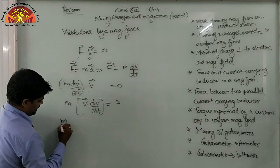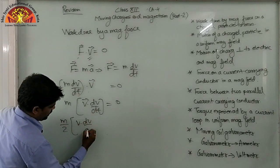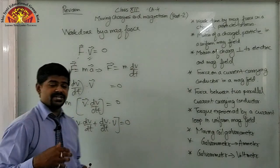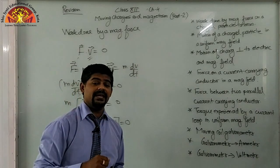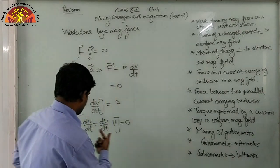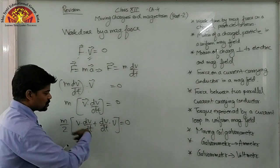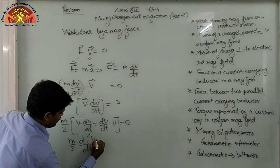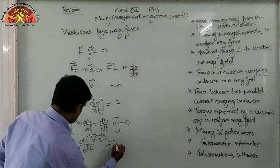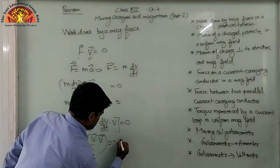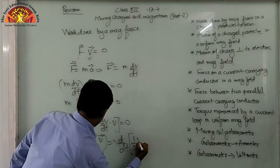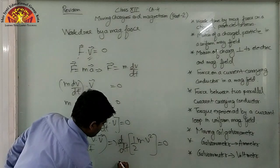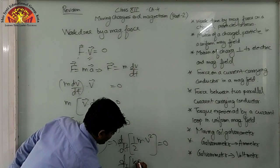Now we rewrite this as m/2 times (V dV/dt + dV/dt · V) = 0. Using the product rule of differentiation — d/dt(a·b) = a·(db/dt) + b·(da/dt) — this becomes m/2 · d/dt(V²) = 0, which is d/dt of (½mv²) = 0. And ½mv² is kinetic energy.